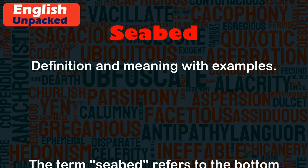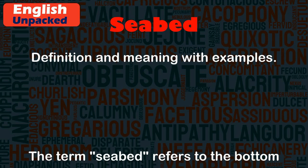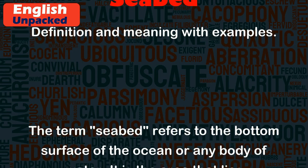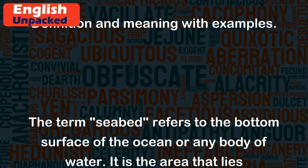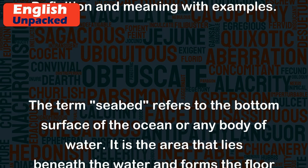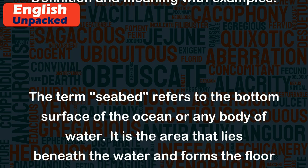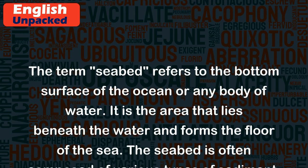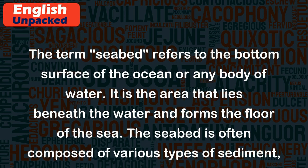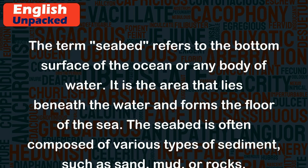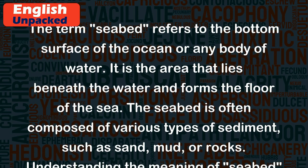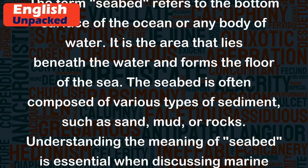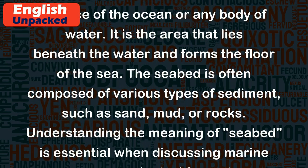Seabed. The term seabed refers to the bottom surface of the ocean or any body of water. It is the area that lies beneath the water and forms the floor of the sea. The seabed is often composed of various types of sediment, such as sand, mud, or rocks.